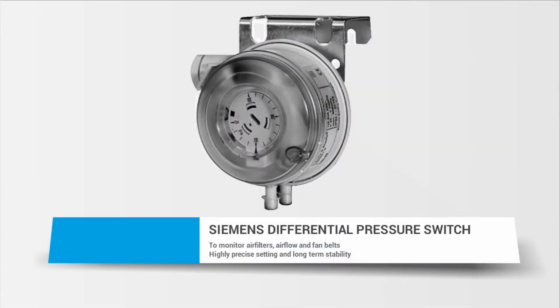In this video, we will use a Siemens differential pressure switch, or DPS. It is used to monitor air filters, air flow, and fan belts.